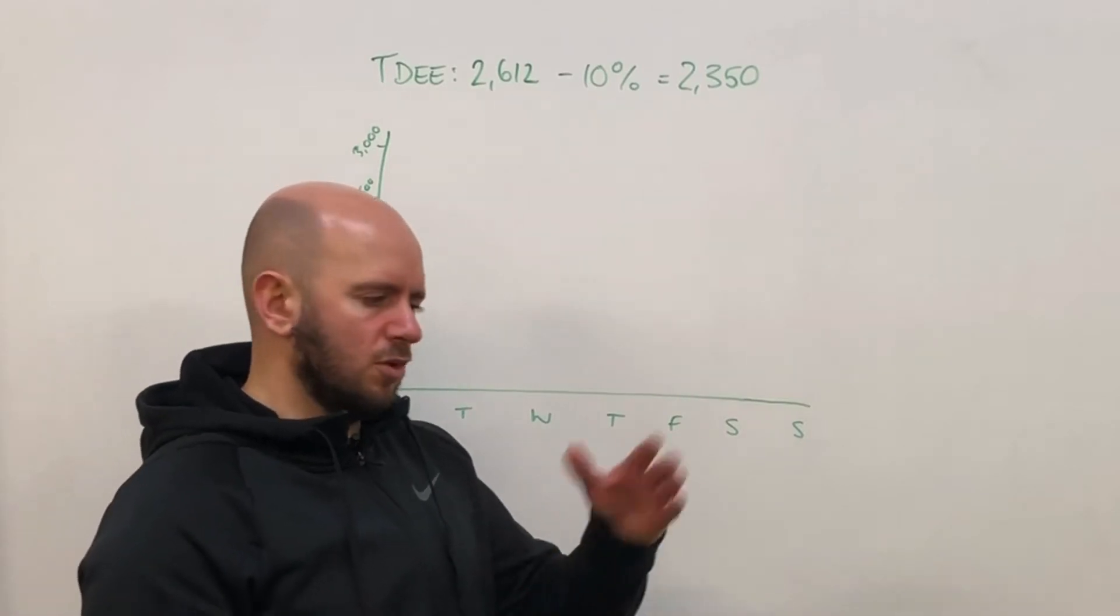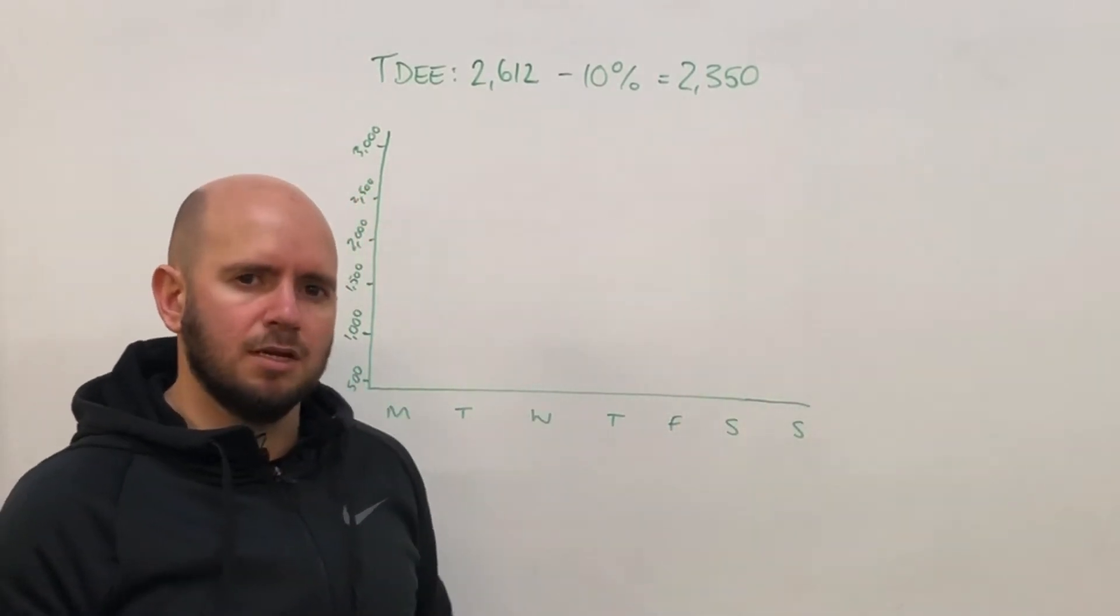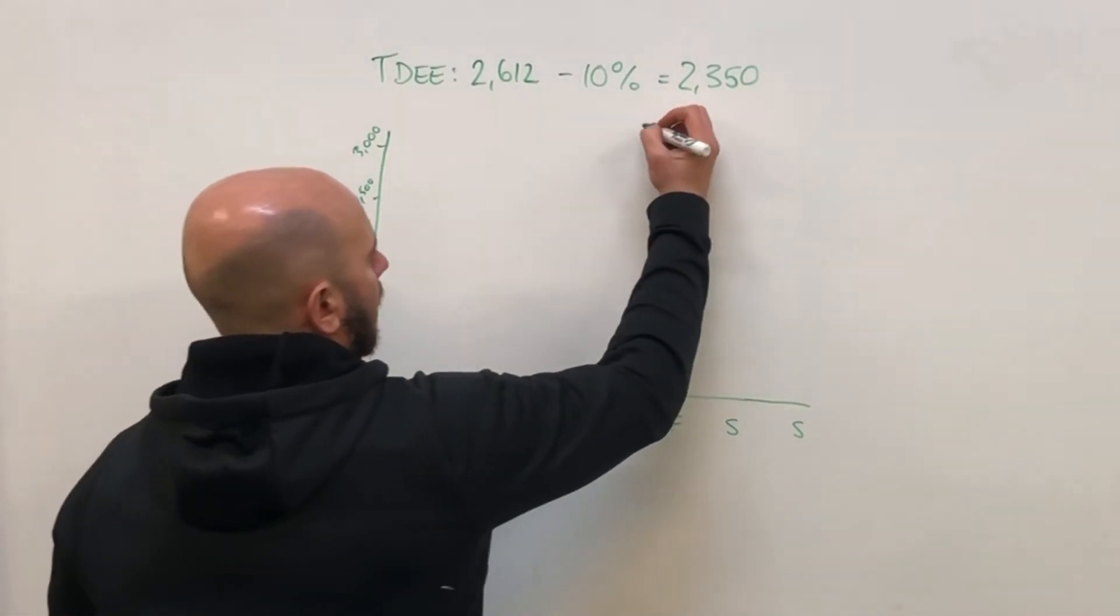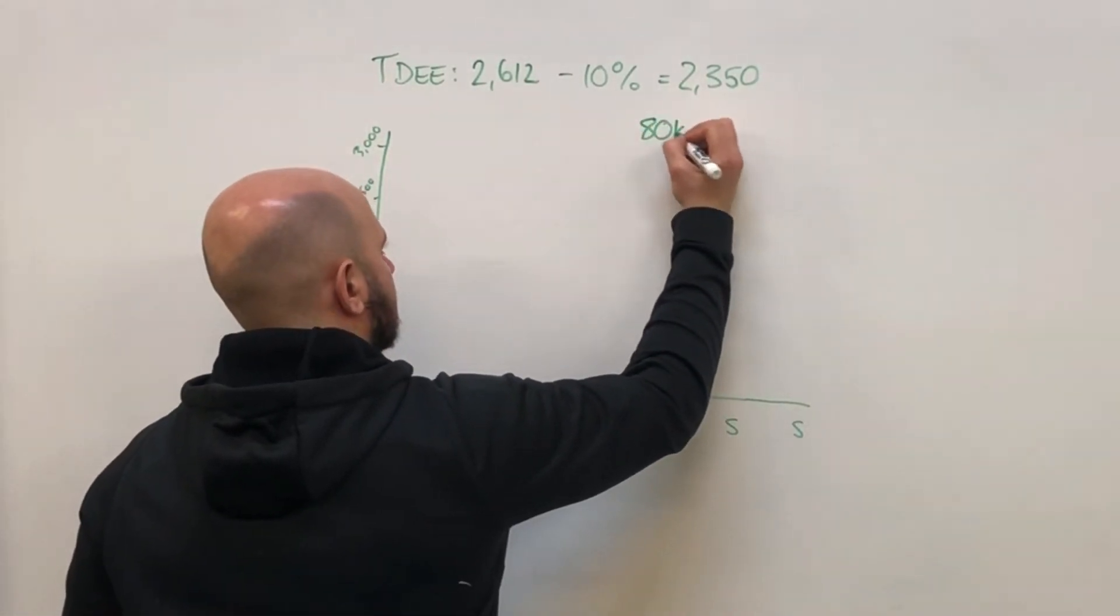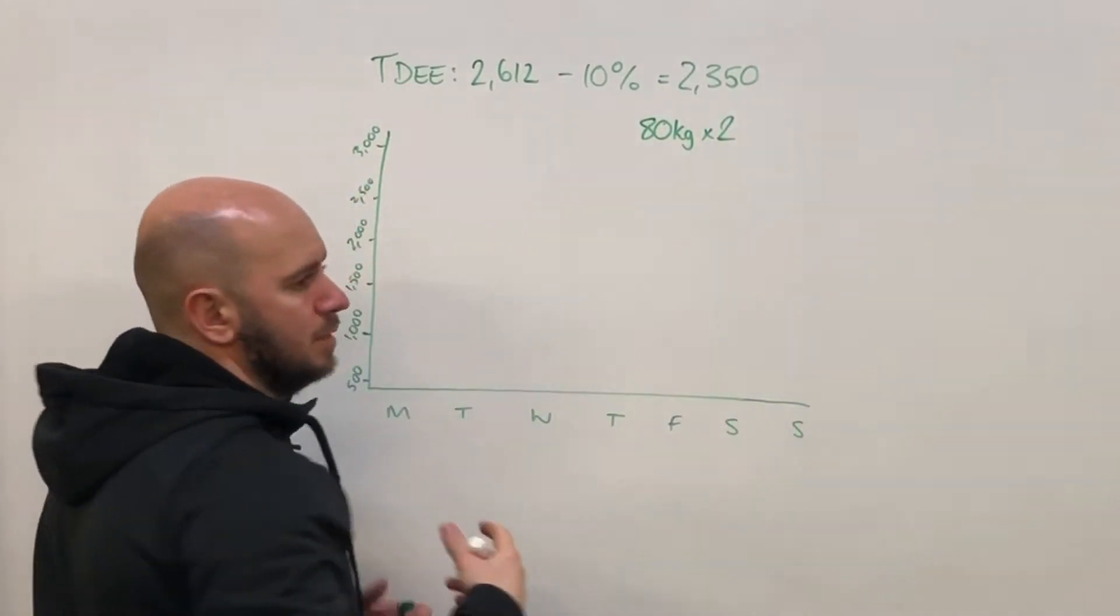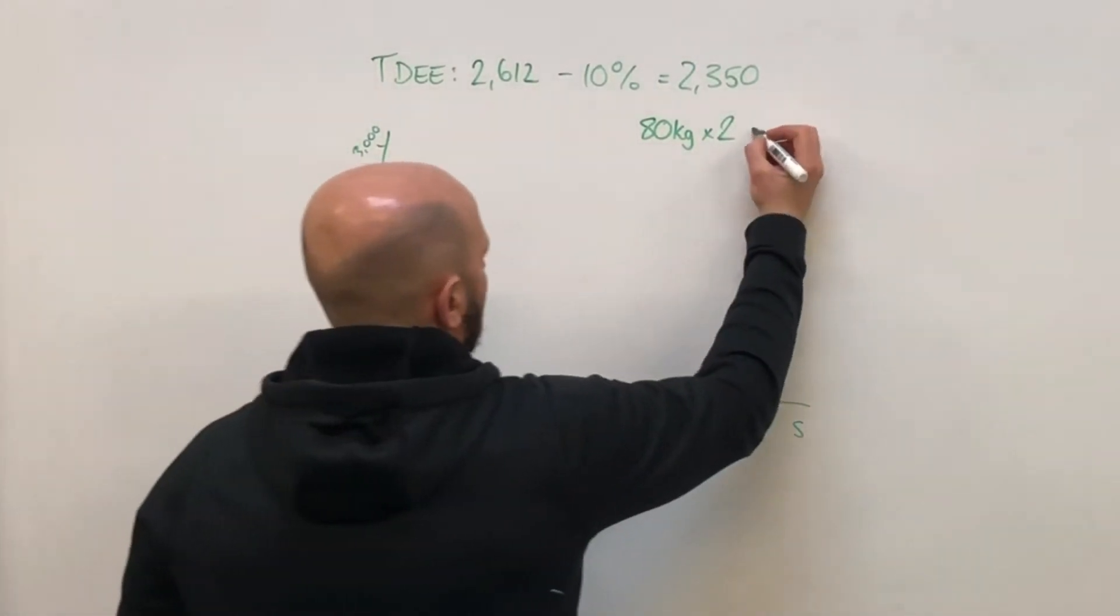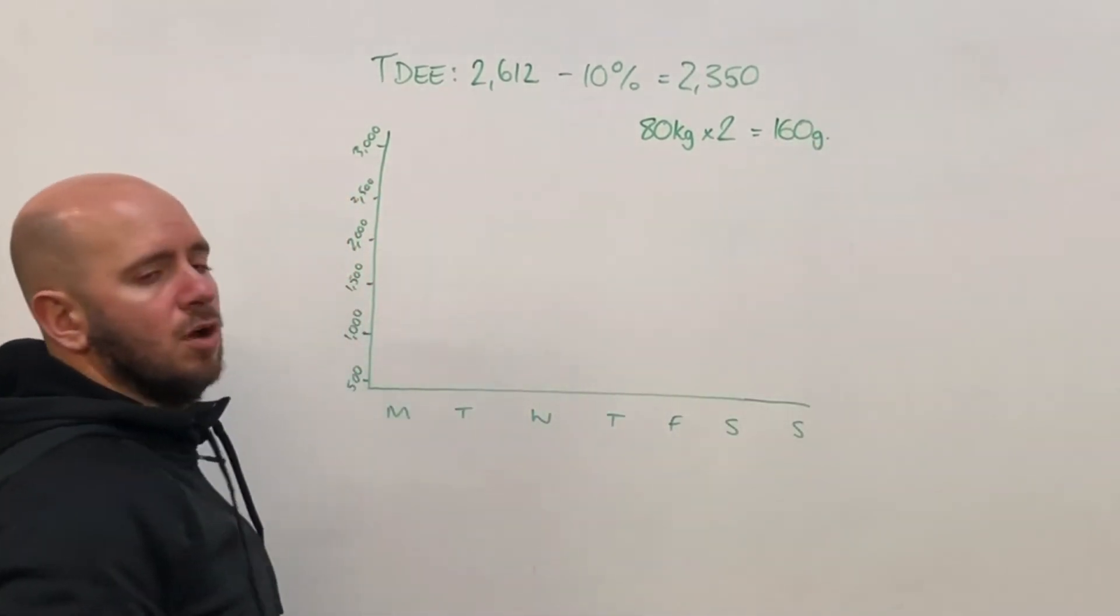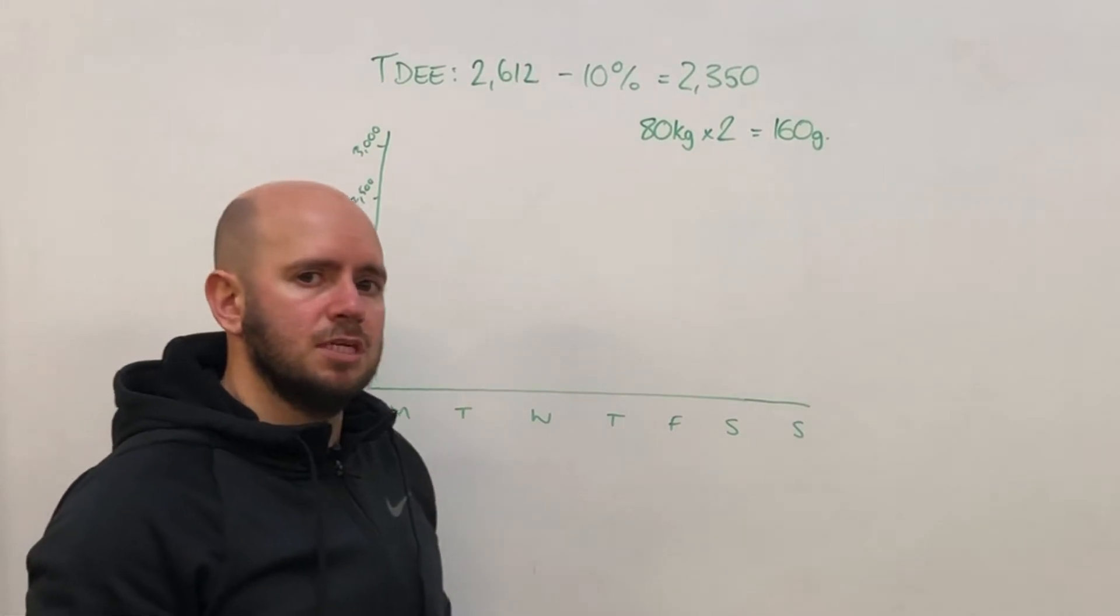So rather than going for 1.5 or 2.5, let's go straight down the middle. Let's go for two grams. So at present, I weigh 80 kilos, times it by two, because there's going to be two grams per kilo. My daily target of protein is in the region of 160 grams of protein per day.